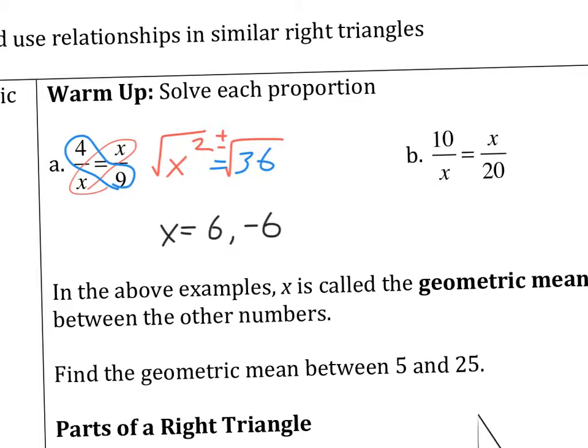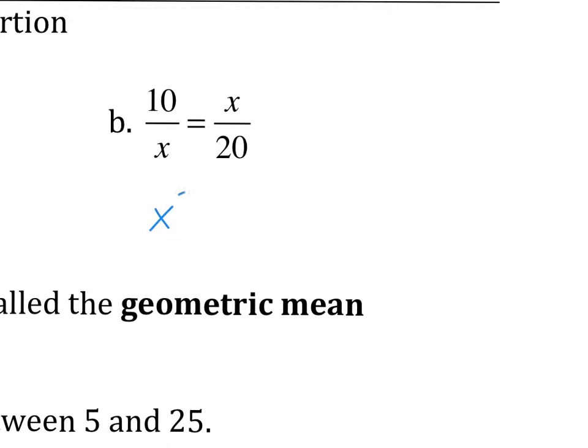So in the end, the answer is x is equal to either positive 6 or negative 6, because both of those numbers work in this case. Positive 6 squared is 36, and negative 6 squared is 36.